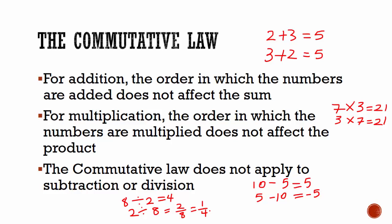So to recap, the Commutative Law says for addition and multiplication, the order in which we add or multiply respectively does not affect the result. This is not true for subtraction or division.